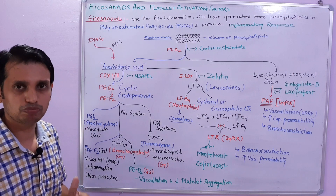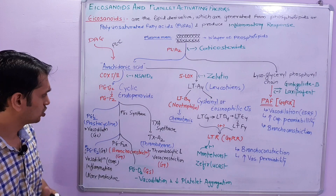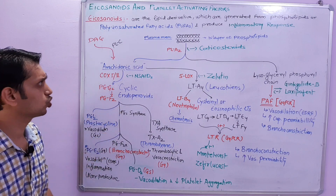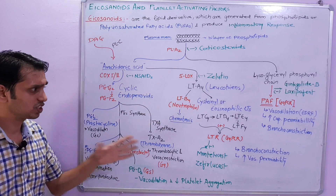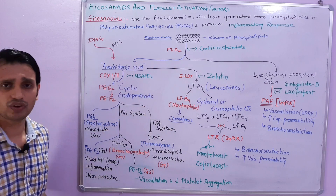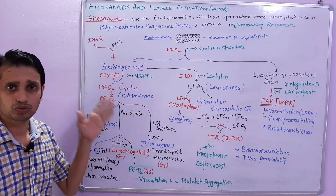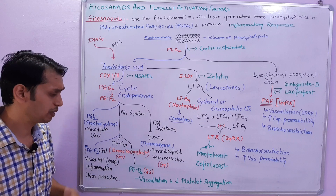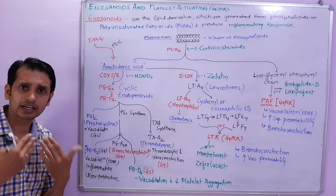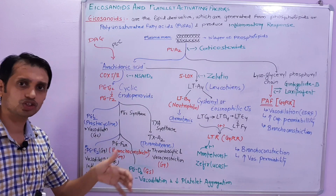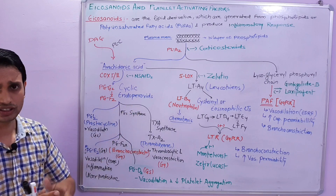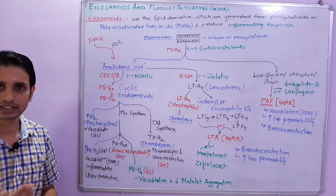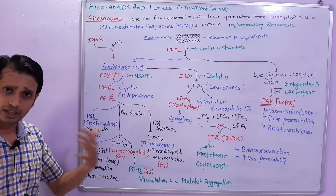These are the basic things of prostaglandins and thromboxanes. These are the basic features of all the prostaglandins, prostacyclins, thromboxanes, leukotrienes, and PAF. In my upcoming class, I will discuss in detail about the pharmacology of all these eicosanoids. Keep tuned to my channel. If you like my videos, please share and subscribe. Thank you.